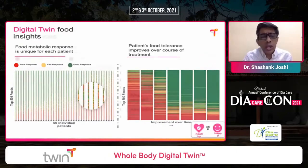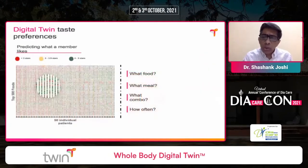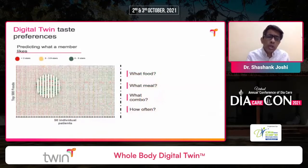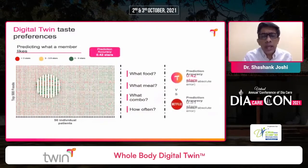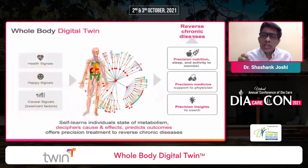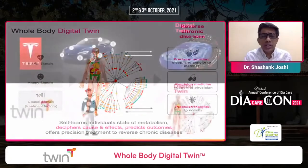For example, if glucose is going up after idli, the system will suggest reducing idli from three to two and increasing the quantity of sambar — adjusting the right portions of carbs and protein. The app predicts and accurately reads various signals to reverse chronic diseases.